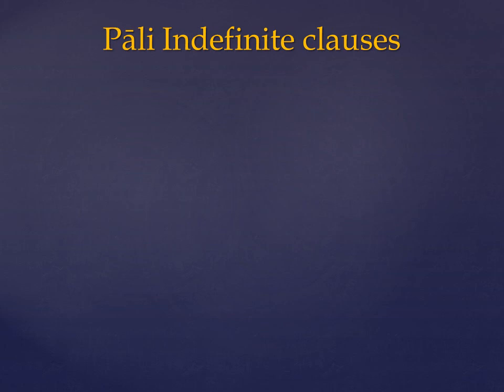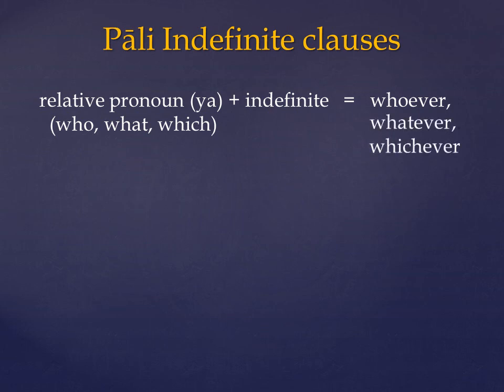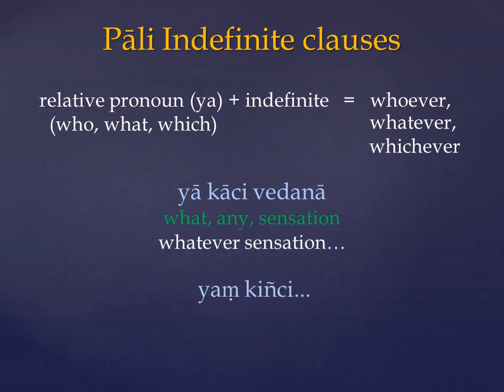Now if an indefinite pronoun is immediately preceded by a relative pronoun — that is, a pronoun with the stem ya — the indefinite pronoun takes on a slightly different meaning, and that is one of whoever. We'll cover relative pronouns in another video, but for now just know that they mean who, what, or which. And so when they combine with an indefinite pronoun, we get whoever, whatever, or whichever. Word for word the example is: what, any sensation. We can see that both ya and kachi are feminine, because vedana is also feminine, and so the pronouns are qualifying it, making whatever sensation. Yang, kachi — whatever thing. Here the pronouns combine to mean anything whatsoever.